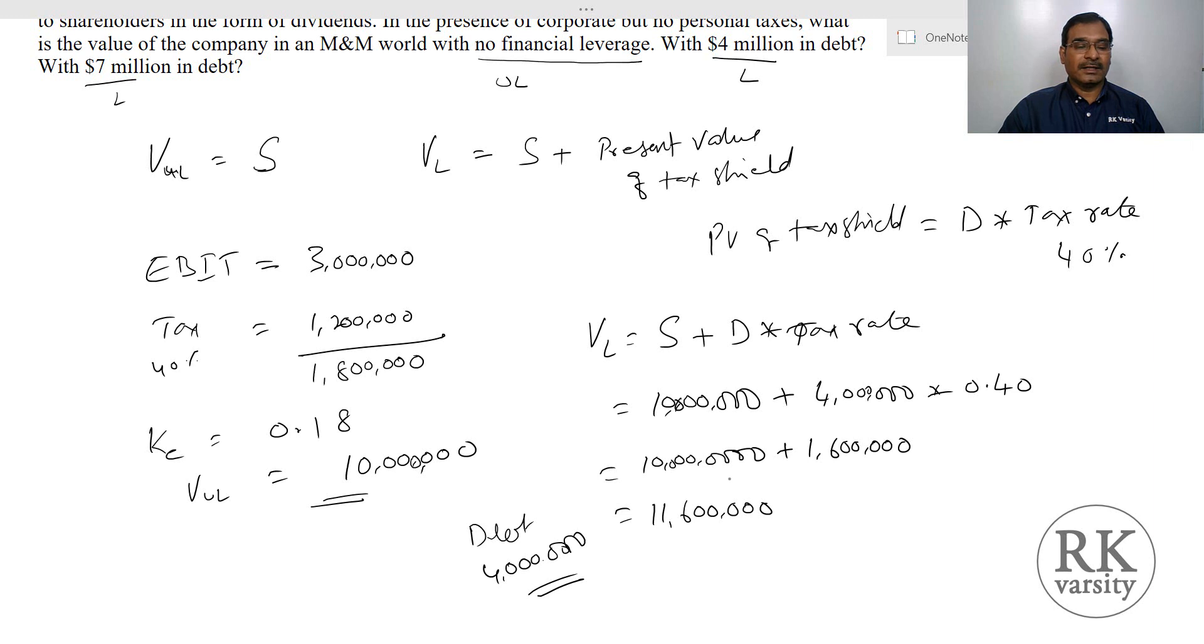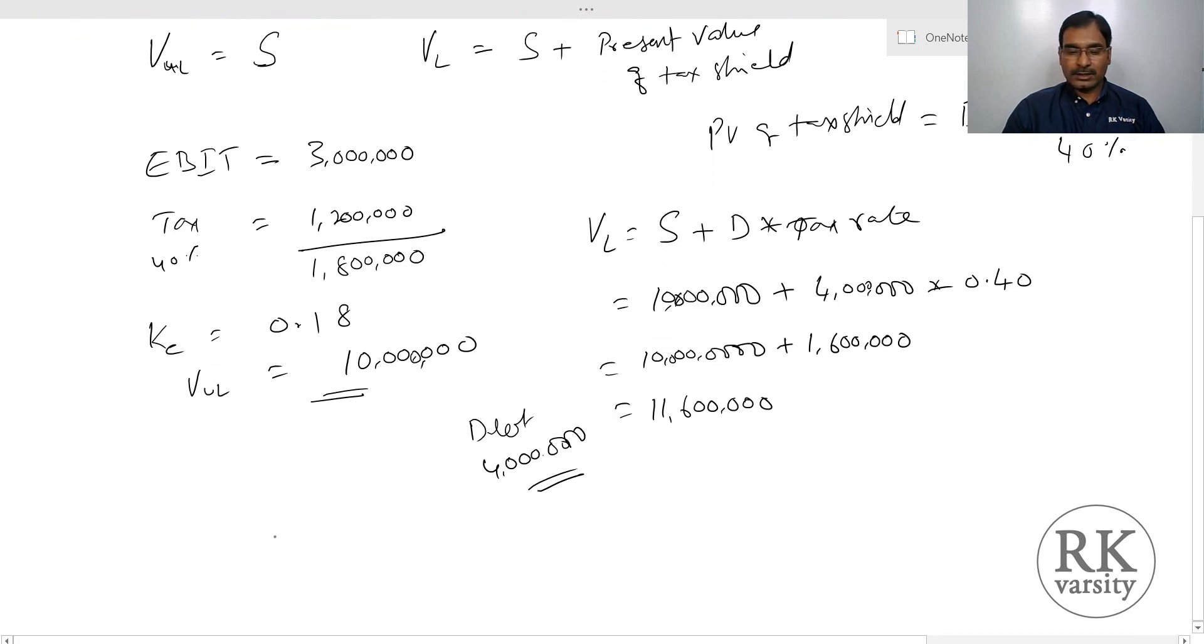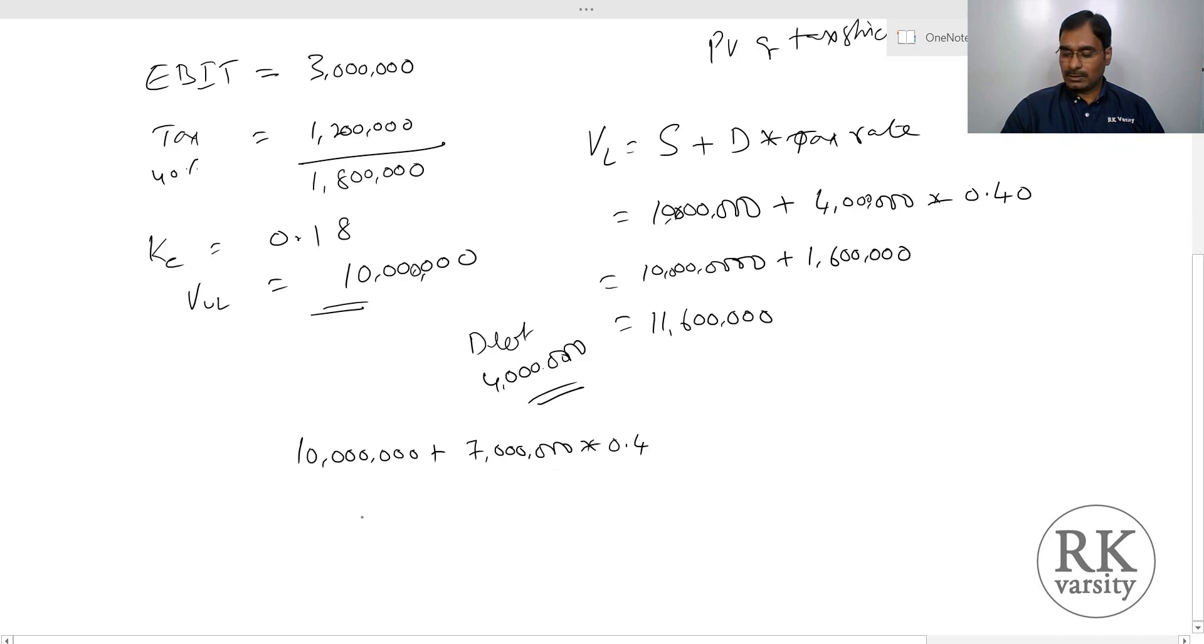Next is what is the value of the firm when $7 million debt is used. You have $10 million plus $7 million debt times tax rate 0.4, so this is $10 million plus $2,800,000, which equals $12,800,000 is the value of levered firm when debt of $7 million is used.